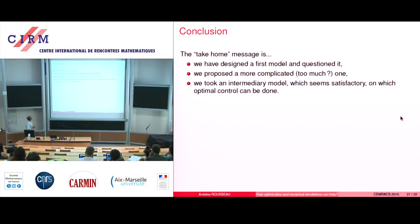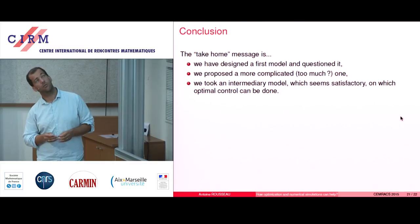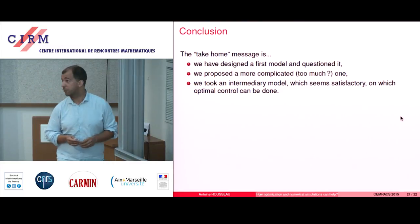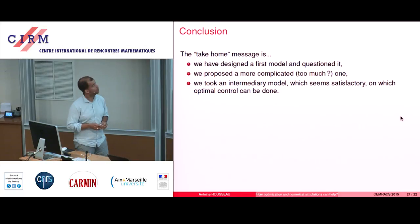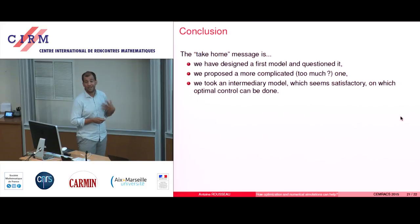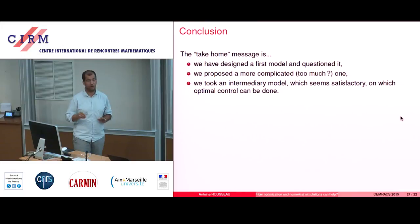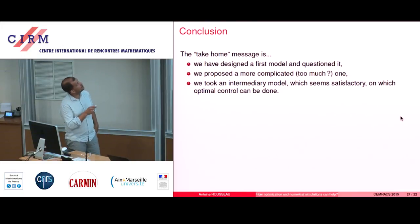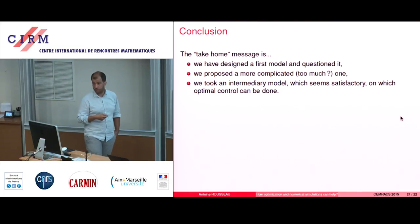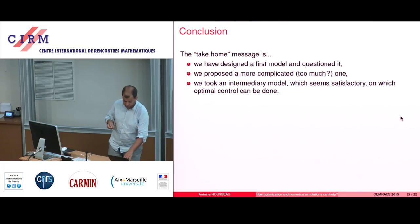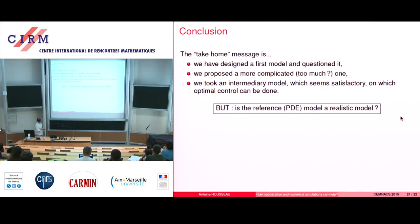And that's it. The take-home message is that we have designed — well, they designed the first model and questioned it. We proposed a more complicated model. Why not the PDE? It's because you can hardly do some control on the PDE system because it's on the boundary and it's very complicated with nonlinear equations. So we took an intermediary model, which seems satisfactory and on which we can still do some optimal control. It's a medium model.